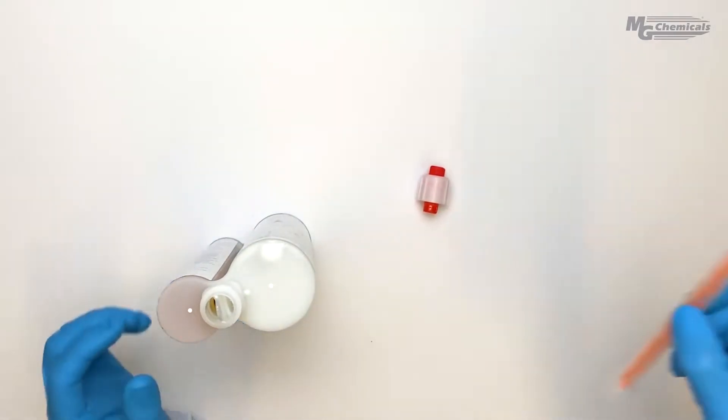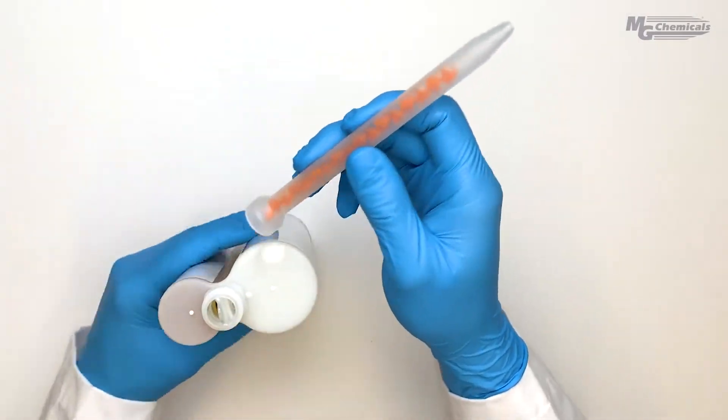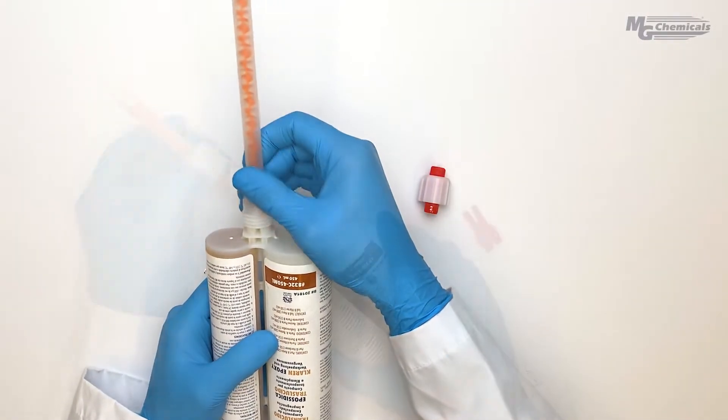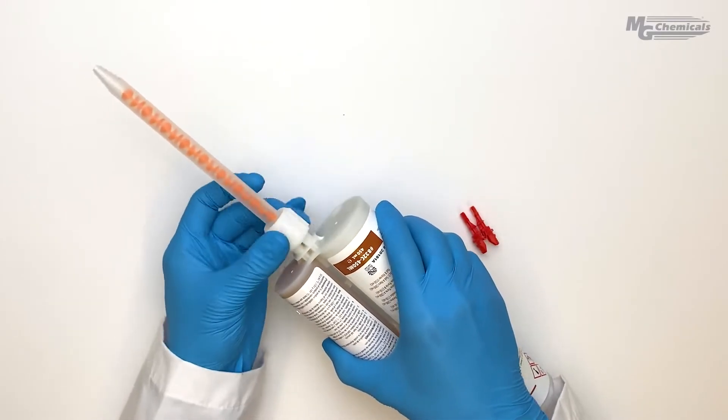then attaching the mixing nozzle the same way as the 400 ml cartridge by sliding the cap over the nozzle and screwing into place.